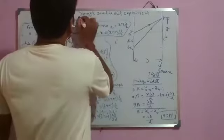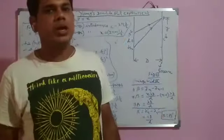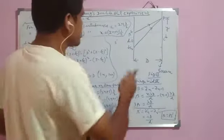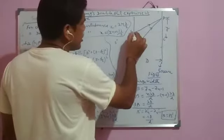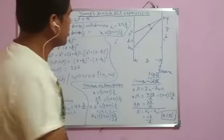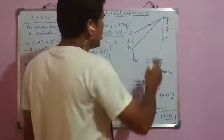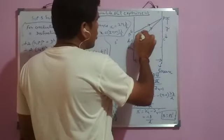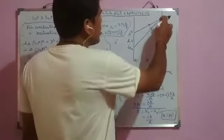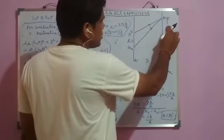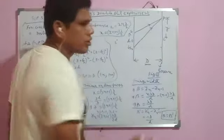We will discuss Young's Double Slit Experiment and its mathematical expression, and we have to prove that fringe width of a bright fringe and dark fringe is the same. This is the experimental arrangement. The primary light source emits monochromatic light, these are the slits S1 and S2, and the distance of separation between S1 and S2 is denoted by small d. O is the midpoint of the two slits, C is the center point of the screen.